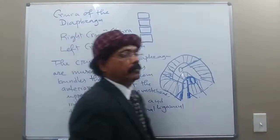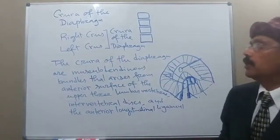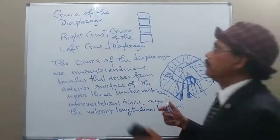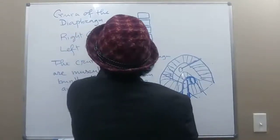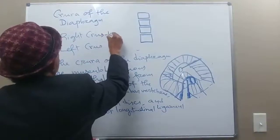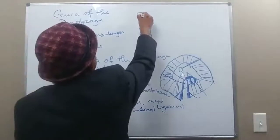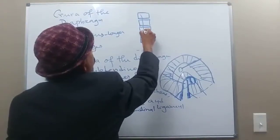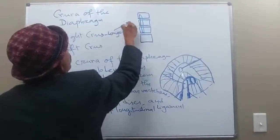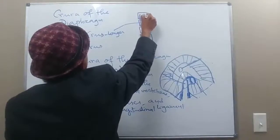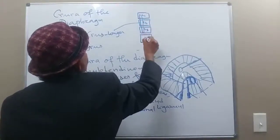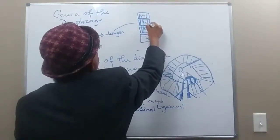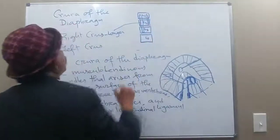So, the origin of the crura of the diaphragm: we have two crura — right and left. The right crus is longer; it usually arises from lumbar one, lumbar two, lumbar three, and even possibly lumbar four. This is L1, L2, L3, L4.